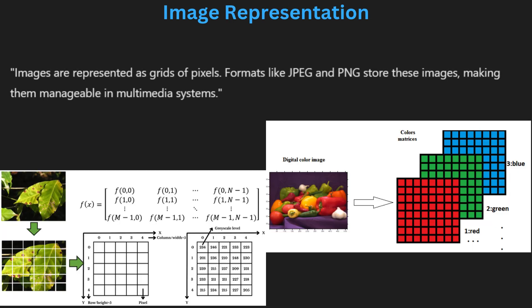First, image representation in multimedia databases. Image representation is a process of converting the visual data we see into a format that can be stored and processed digitally. Each image is made up of pixels, and these pixels are represented in a matrix or grid structure. The color information of these pixels can be in formats like RGB or grayscale. Image compression techniques such as JPEG help to reduce file size for easier storage. Effective image representation is crucial for efficient retrieval and manipulation of image data, and the choice of representation affects both quality and storage efficiency.